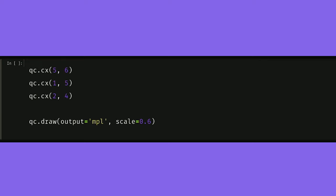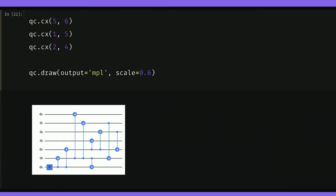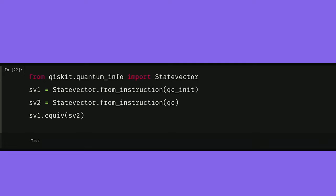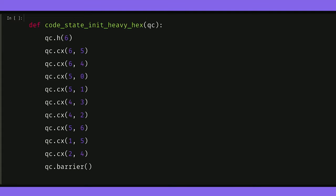Now by adding a few extra CNOTs, we can undo the entanglement we don't need, which is on the ancilla and the flag qubits. We get that. And just to make sure that we did things right, we can use the state vector library from the quantum info module to confirm that the state vector we get from initializing our quantum circuit in both ways is identical. We'll discuss the quantum info module in a separate video. We'll take all those gates together and combine them in a method we call code_state_init_heavy_hex.